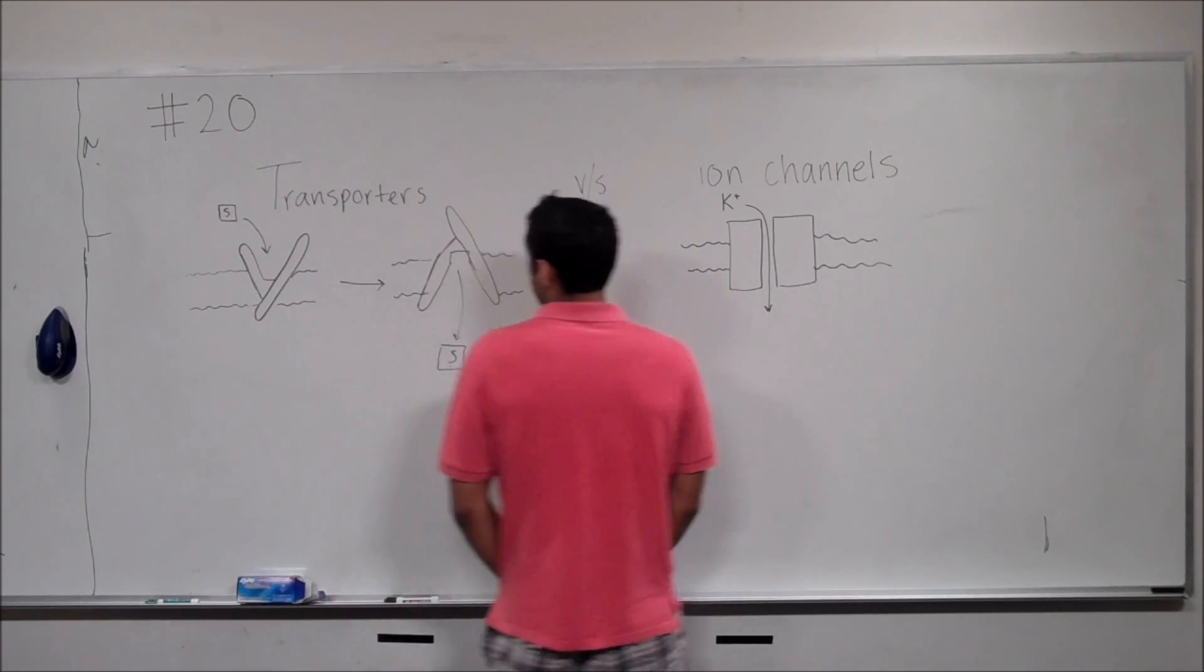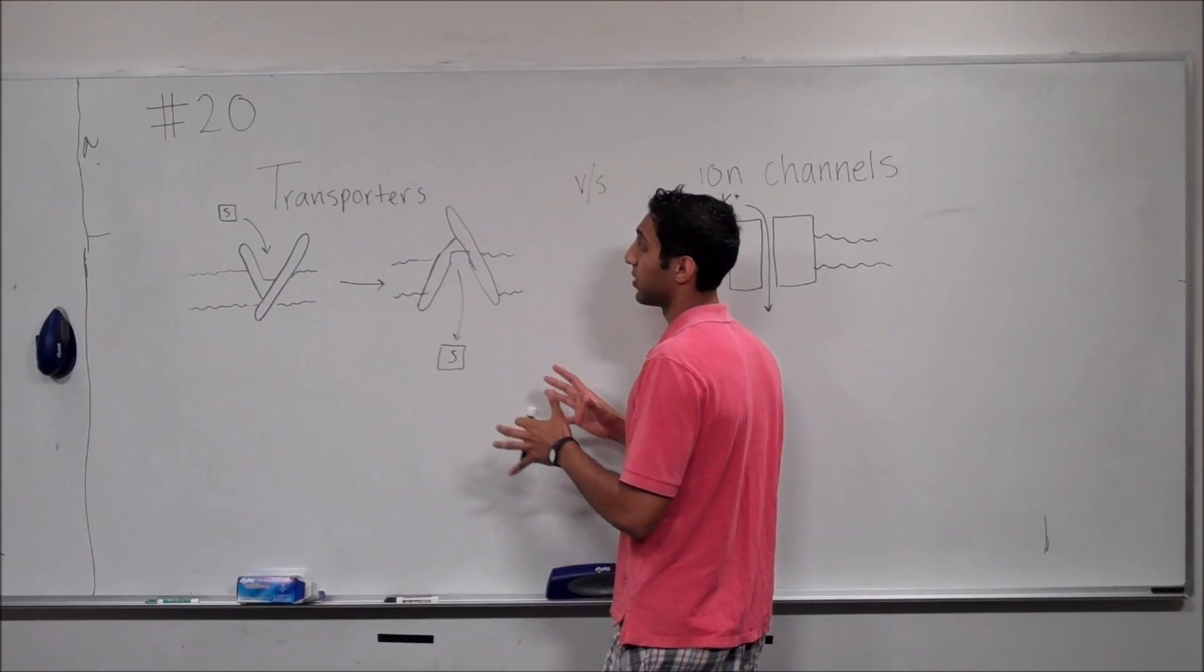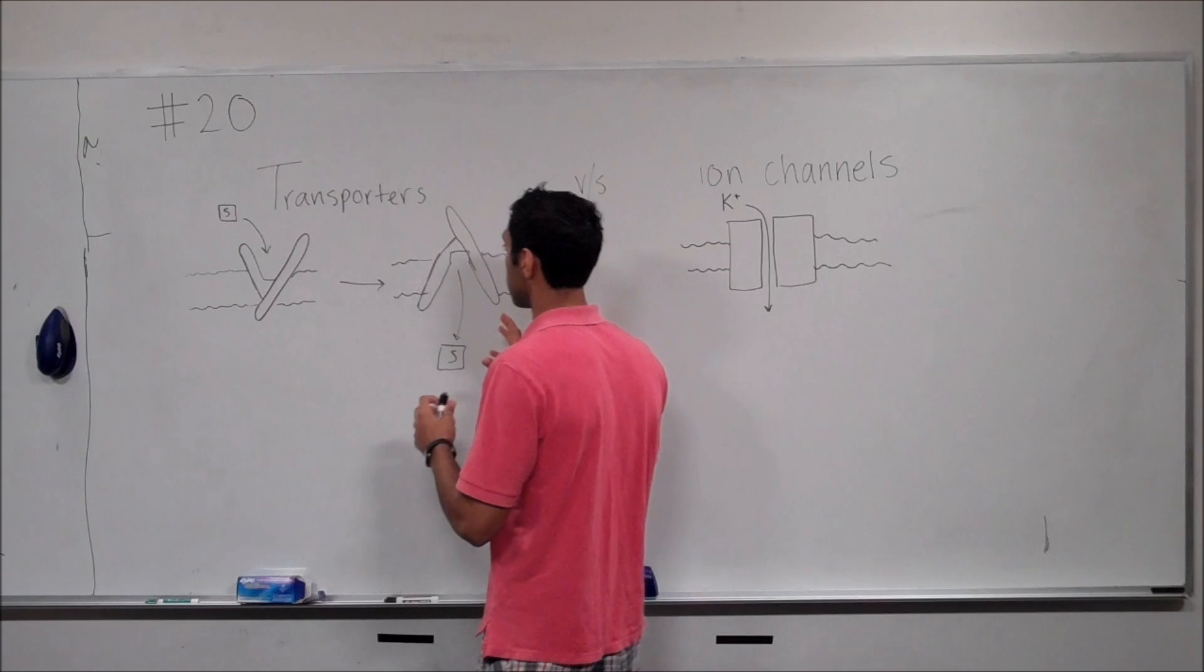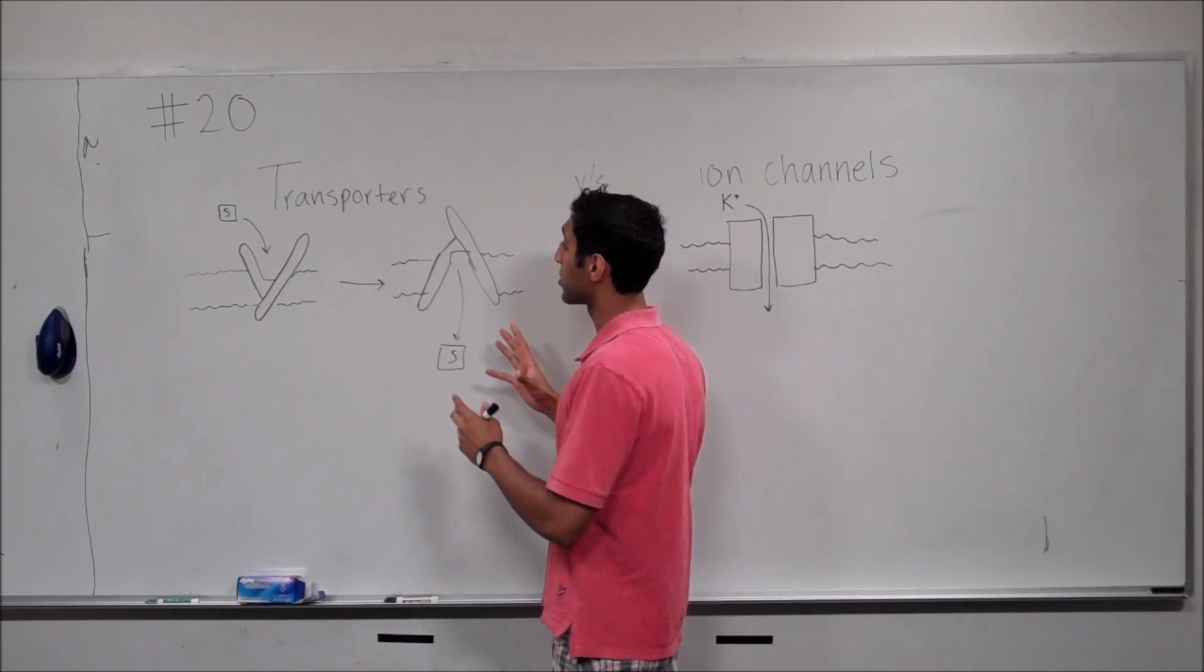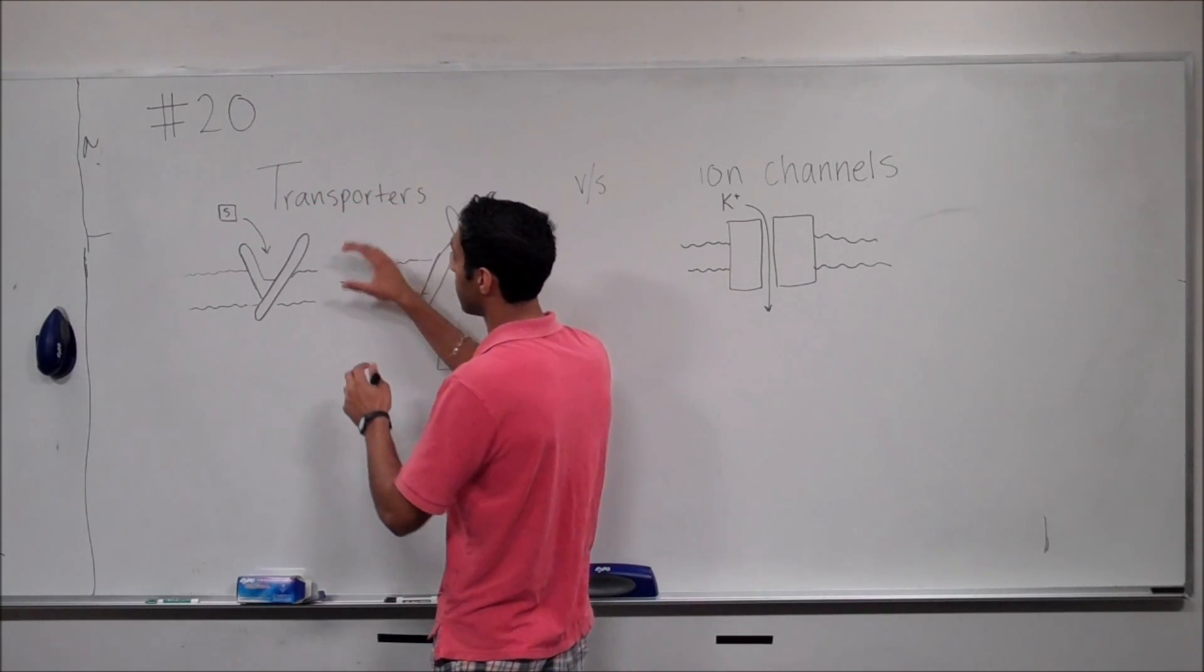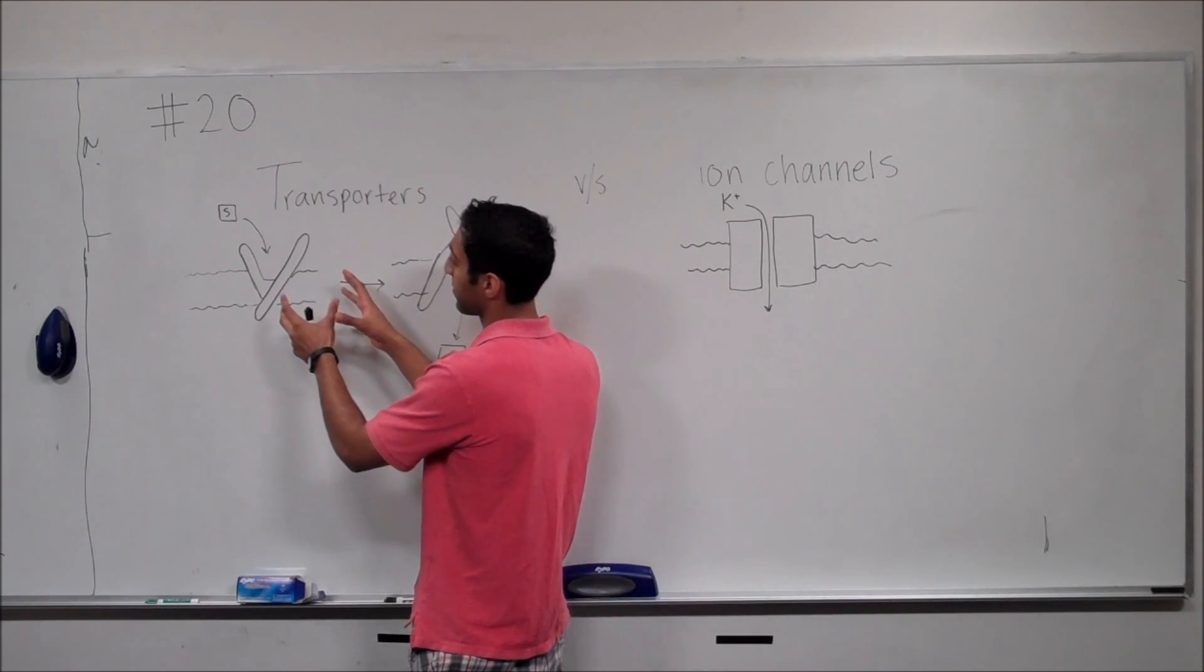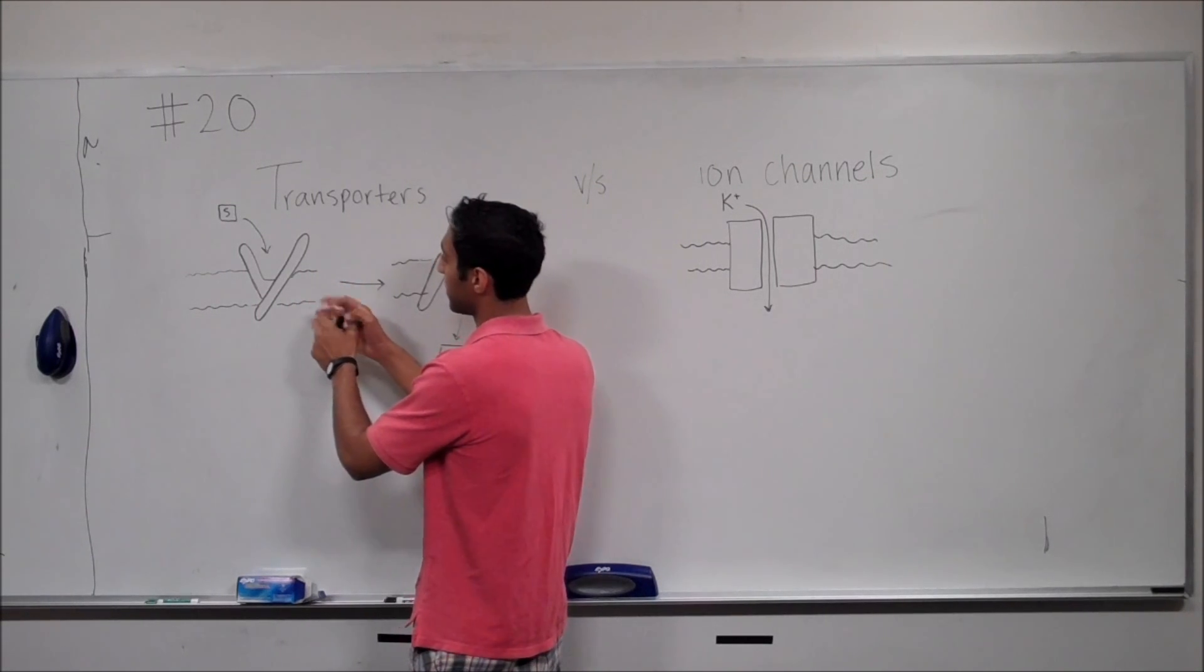The major differences between transporters and ion channels from a physical standpoint is the shape of the proteins and how they function. In transporters, generally, you'll have a substrate bind to what is sort of like an active site or a portion of the protein that is complementary in the shape.